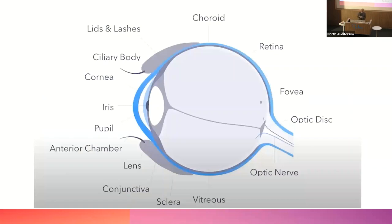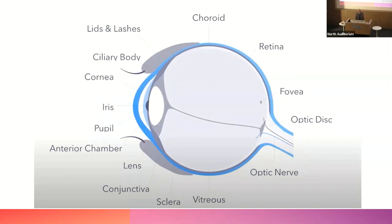Relevant anatomy: think about red eye from front to back. Starting at the front, the lids and lashes can be involved. The cornea is often involved in red eye presentations. The conjunctiva is often involved. Then you've got the sclera and episclera, which I'll talk about a bit later. The anterior chamber, iris, and pupil are involved in anterior uveitis and acute angle closure glaucoma.